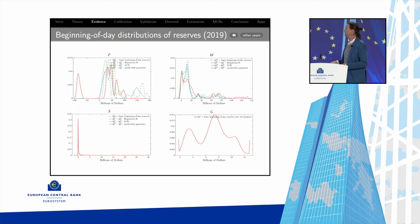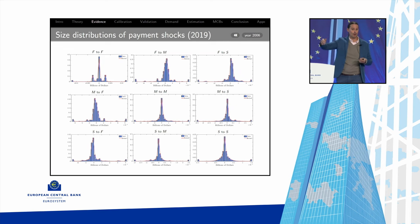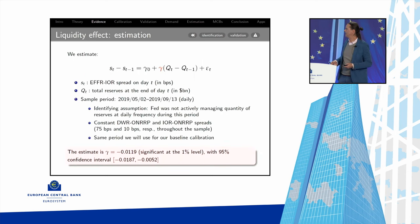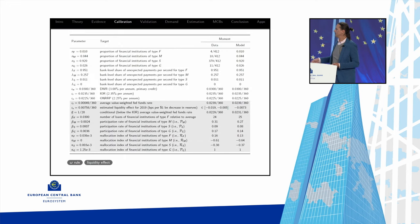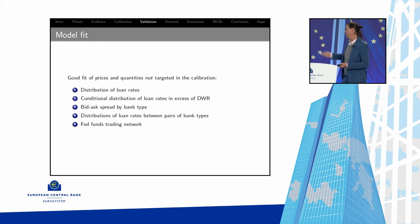We estimate payment shocks for each bank type — how frequently they occur and how large — because this is critical for calibrating the theory. We estimate reserve distributions for the four bank types and make adjustments for Regulation D, LCR, netting out predictable payments since those are irrelevant from the theory's perspective. The model validates well: it looks good on moments we did not target but that are relevant, giving us confidence that it's a reasonable theory of interest rate formation in the Fed funds market.